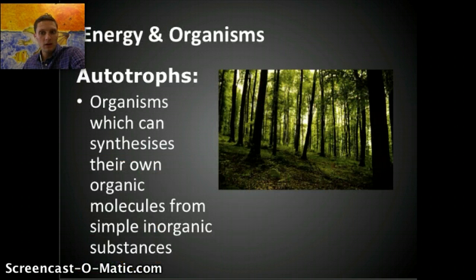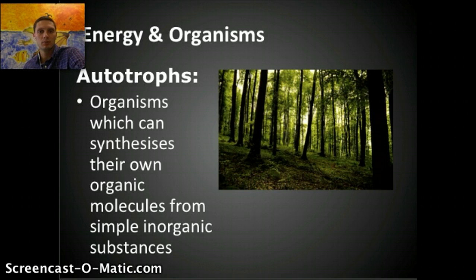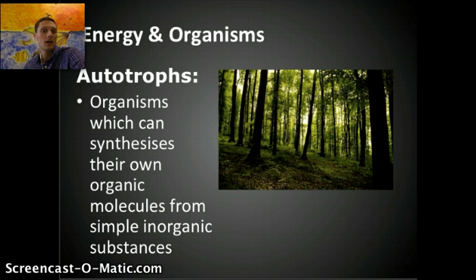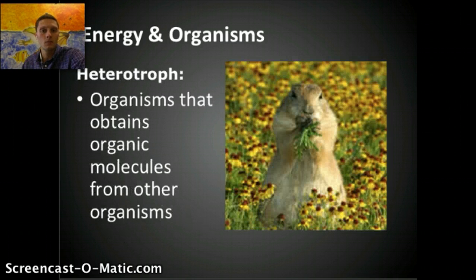The first basic definition is an autotroph. An autotroph is anything that's able to produce or synthesize their own organic molecules — essentially sugars or energy — from simple inorganic substances. Things that do this include plants, photosynthetic bacteria, and algae, which are all labeled autotrophs because they're able to produce their own organic molecules.